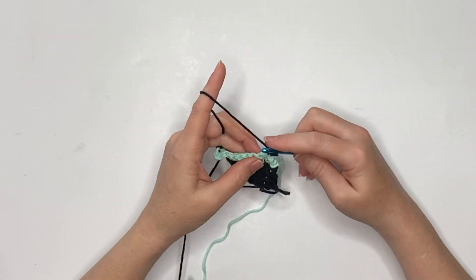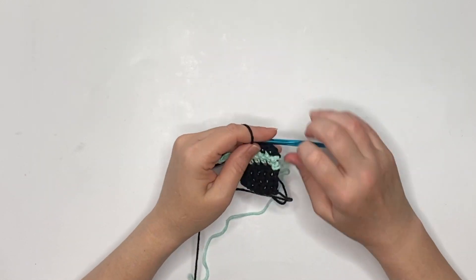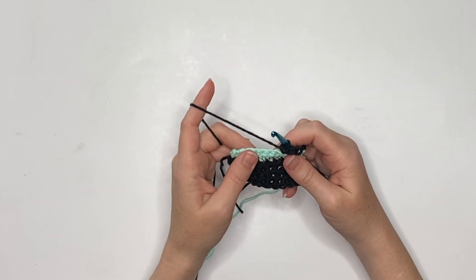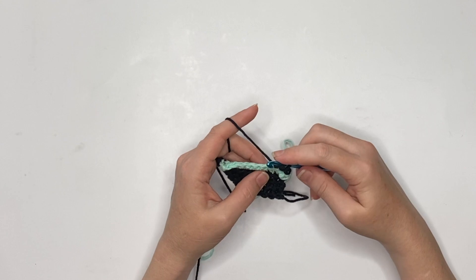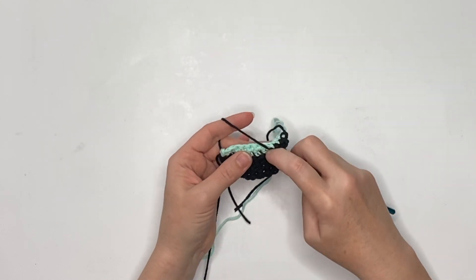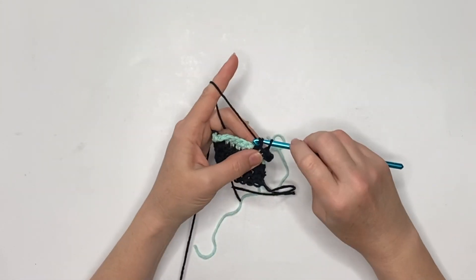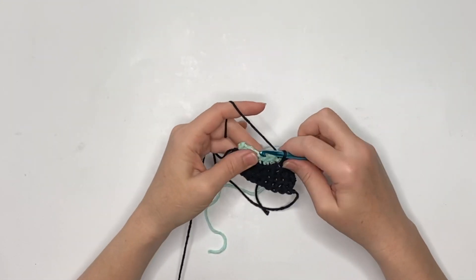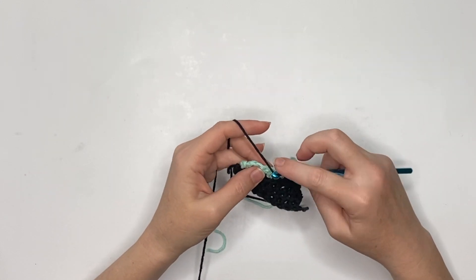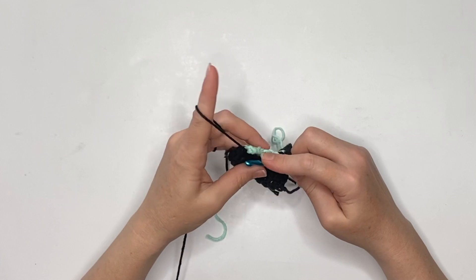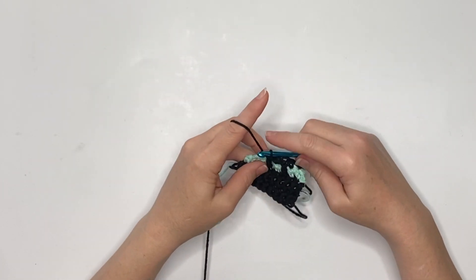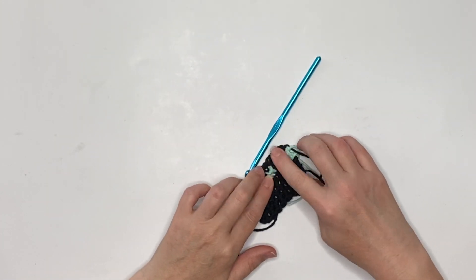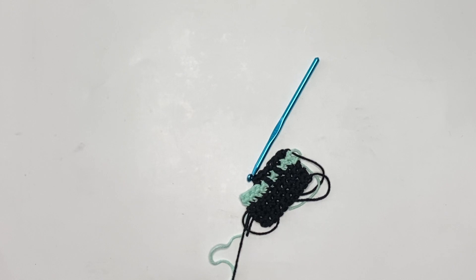Then we're going to treble crochet into the front loop only of the next stitch below the one where we did the back loop only. Go all the way down to the last black and then come up, and then we'll single crochet again. We'll repeat that two times as we work across. This will give us this cute and slightly interesting design that's sort of like mosaic but not exactly—a very beginner mosaic.